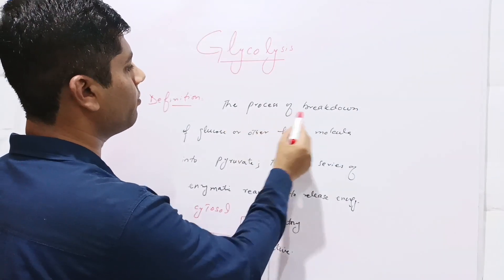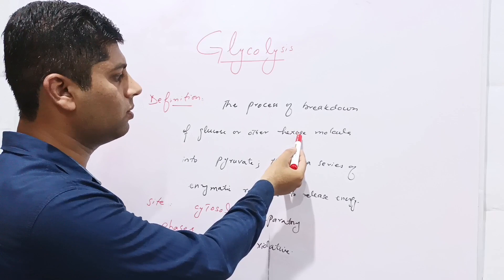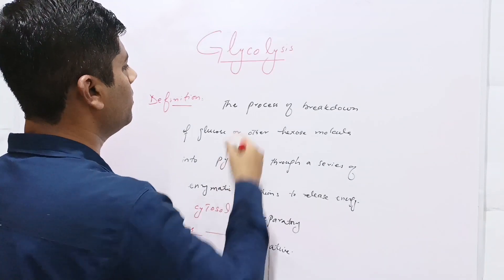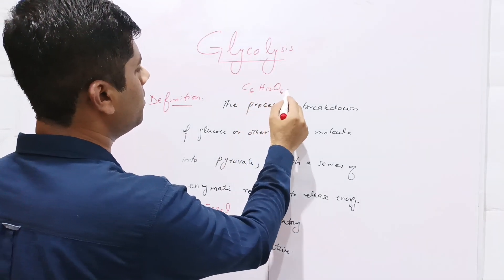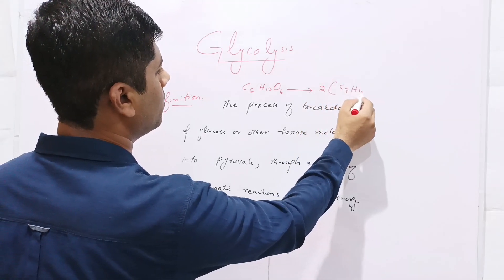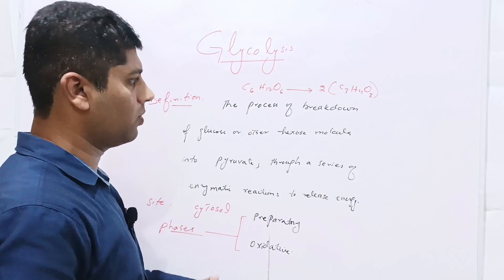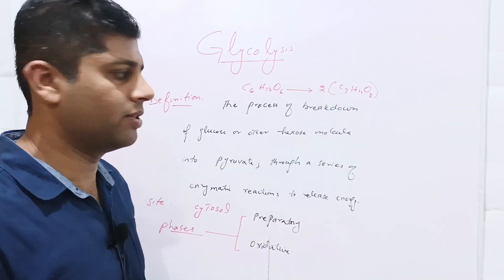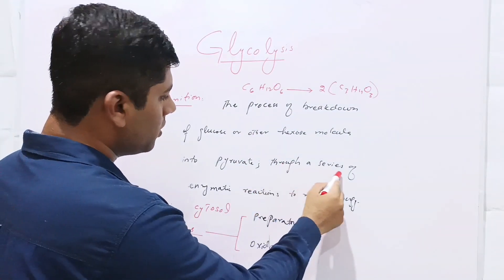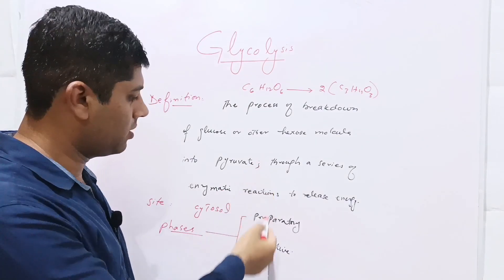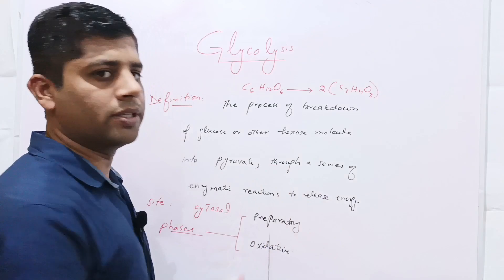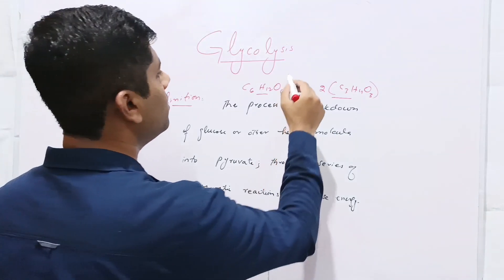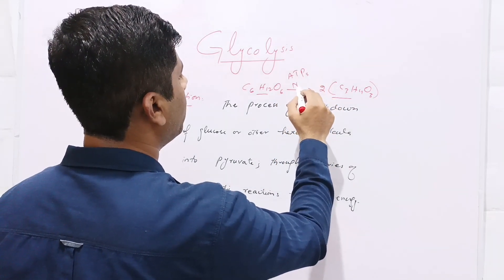Glycolysis may be defined as the process of breakdown of glucose or any other hexose molecule — most commonly glucose — into pyruvate. One glucose molecule is broken down into two molecules of pyruvate, with the chemical formula C3H4O3. This breakdown occurs through a series of enzymatic reactions and energy is released in the form of ATPs and NADH.